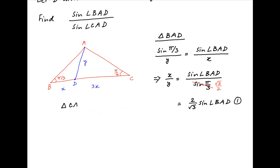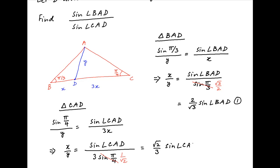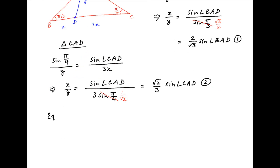Similarly, applying the sine rule in triangle CAD, we have sin(π/4) divided by y is equal to sin(∠CAD) divided by 3x. Therefore, x/y is equal to sin(∠CAD) divided by 3×sin(π/4). Since sin(π/4) = 1/√2, the value of x/y is equal to (√2/3) × sin(∠CAD). Let's call this Result 2.